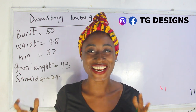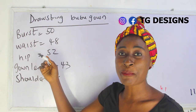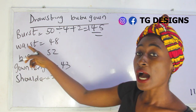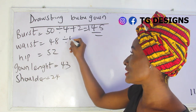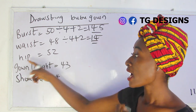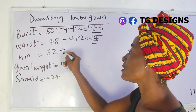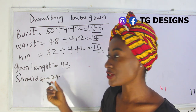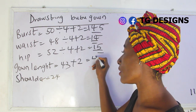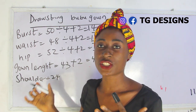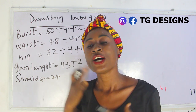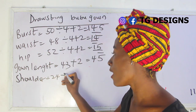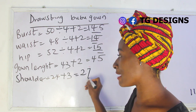Let's calculate our measurements. Bust is 50: 50 divided by 4 plus 2 gives 14.5 inches. Waist is 48: 48 divided by 4 plus 2 gives 14 inches. Hip is 52: 52 divided by 4 plus 2 gives 15 inches. Gown length is 43, plus 2 inches seam allowance gives 45 inches. Shoulder measurement is 24 inches. We then add 3 inches to get 27 inches.